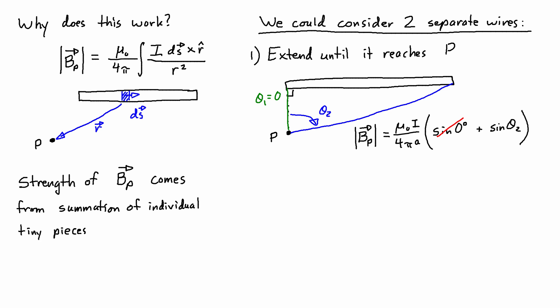But since sine of 0 degrees is just 0 itself, we end up only considering the effect of theta 2, sine of theta 2. So this simplifies down.